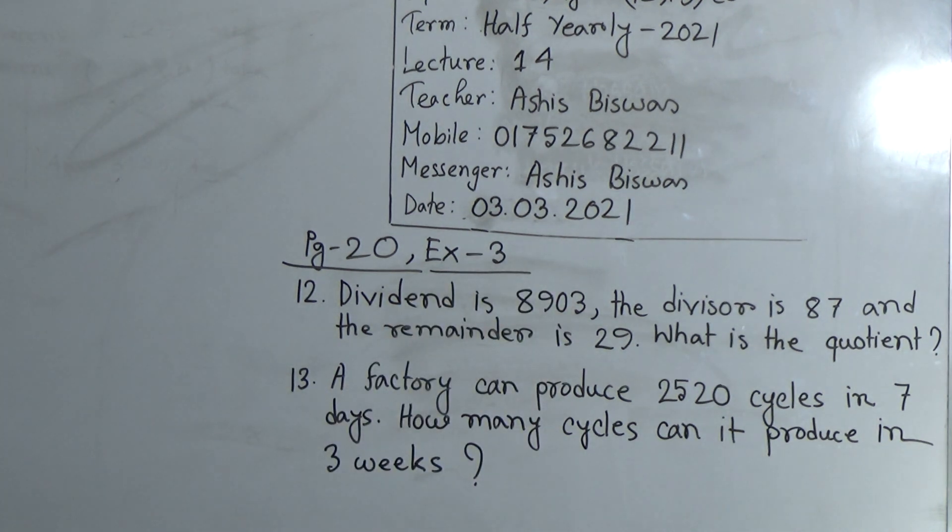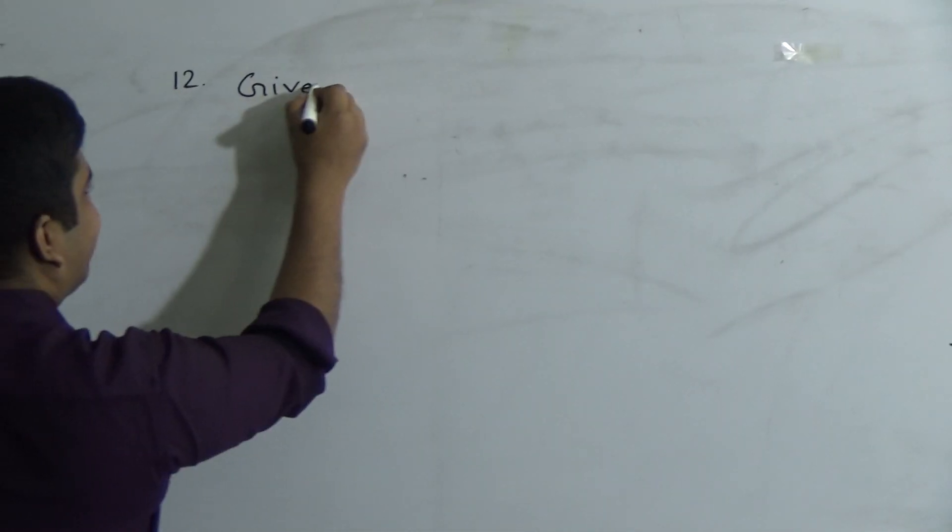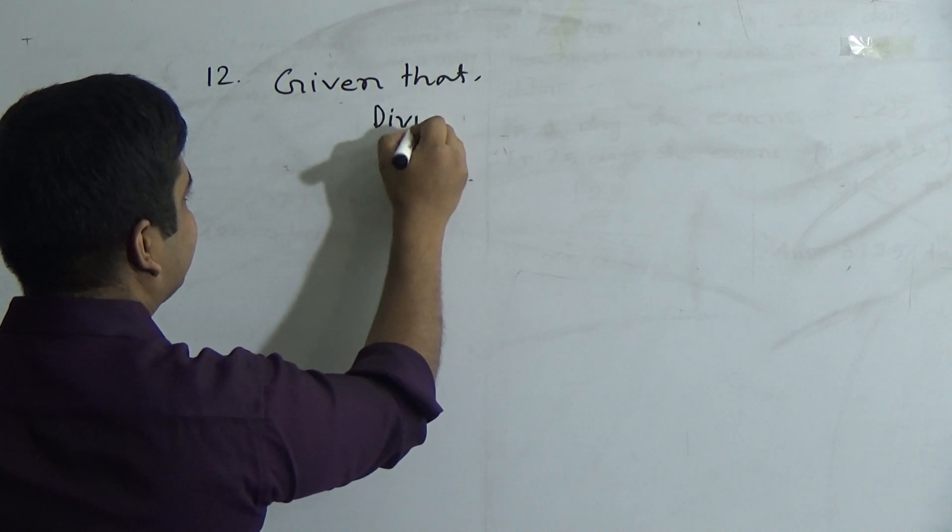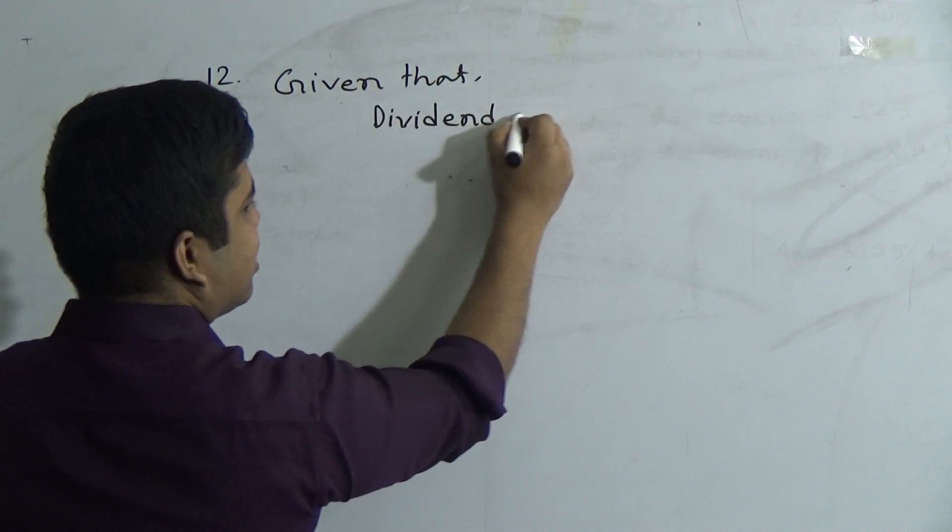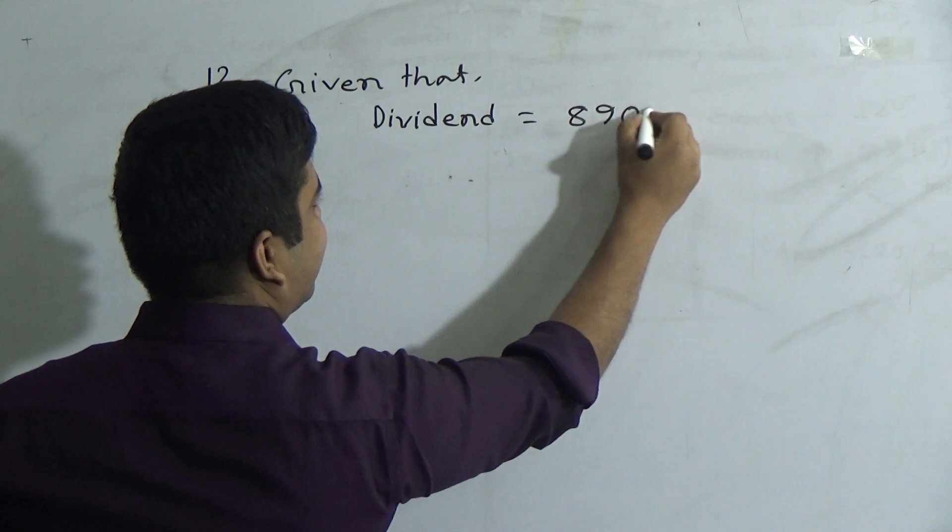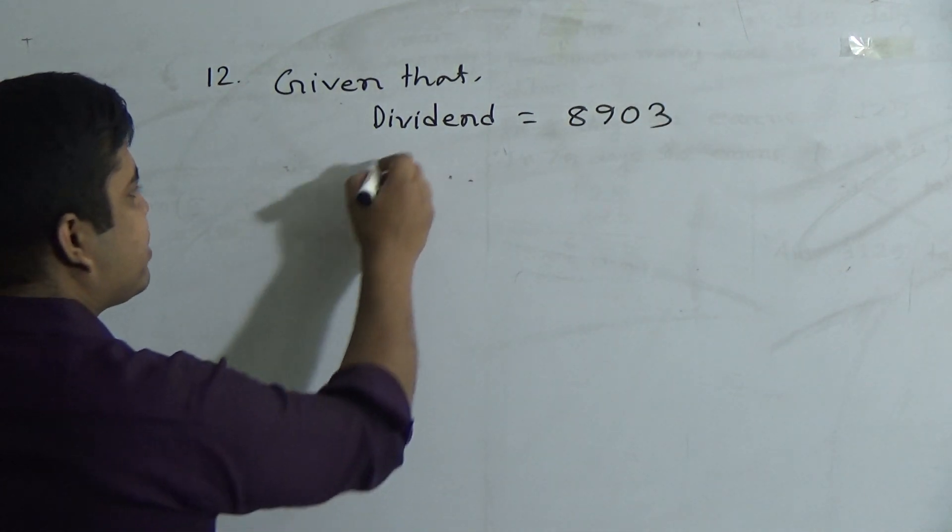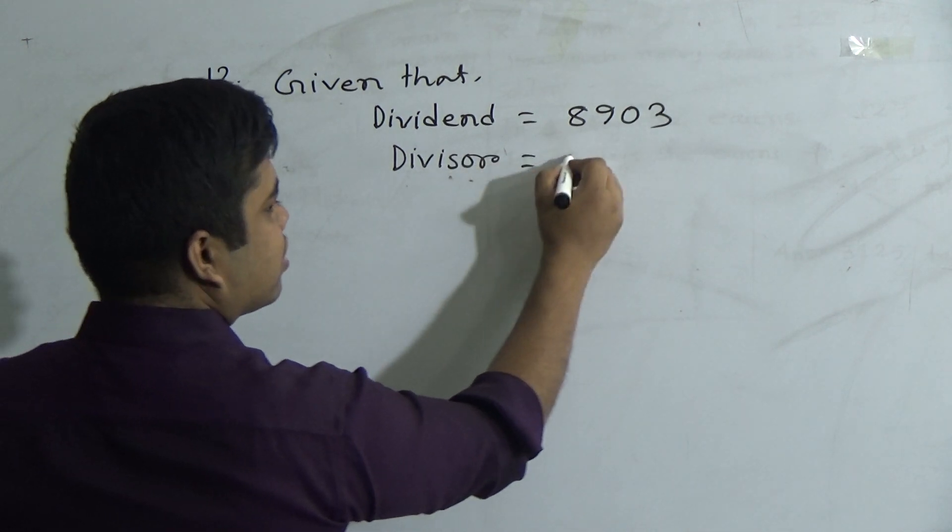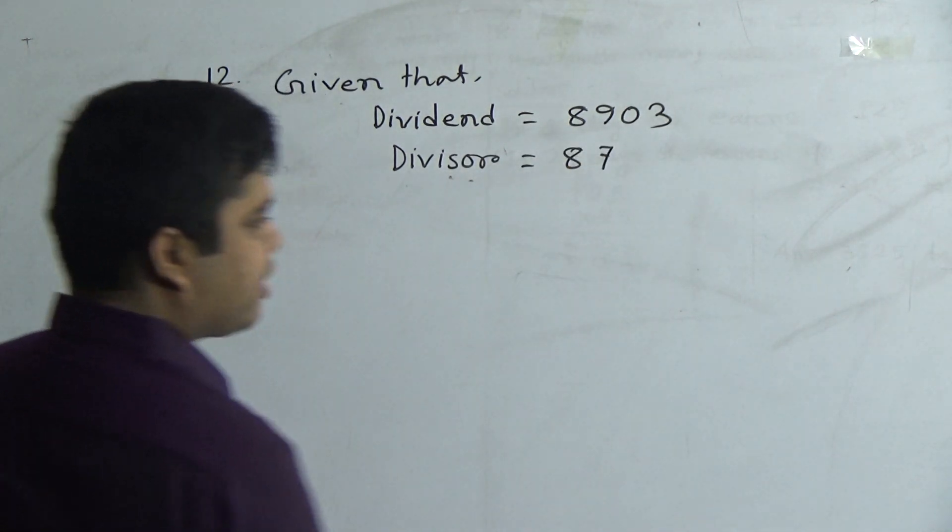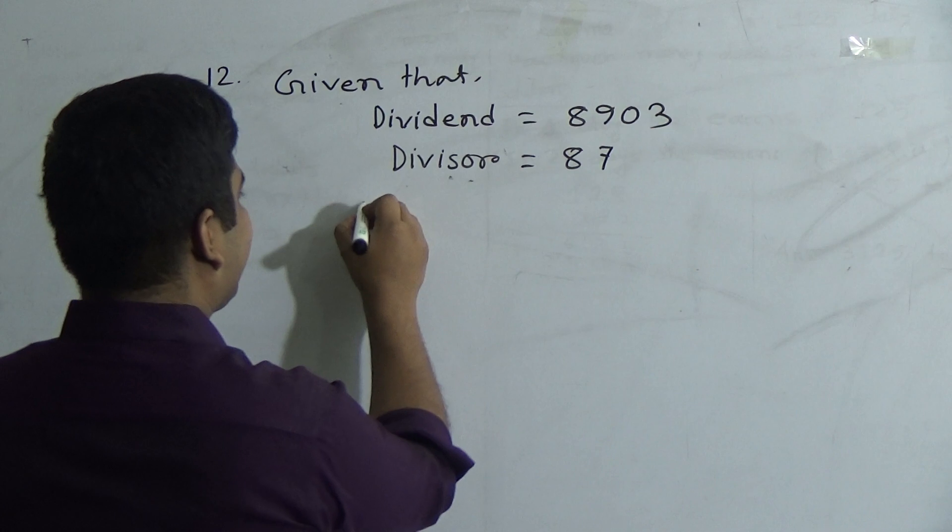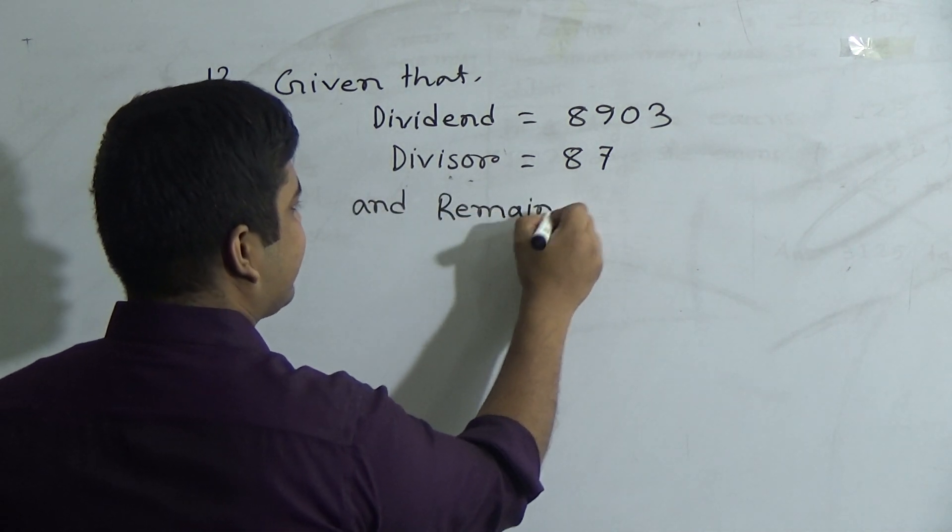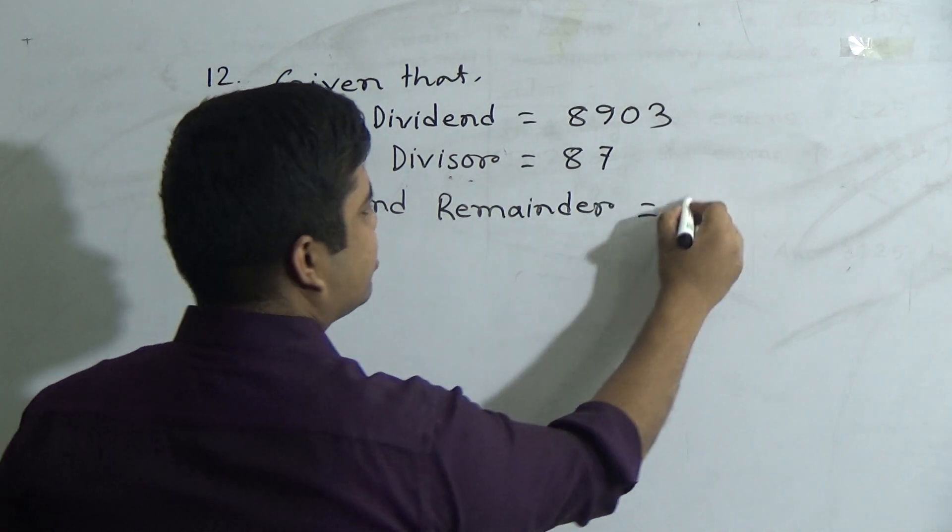So first of all, in order to solve that, we write given that: dividend equals 8903, divisor equals 87, and remainder equals 29.